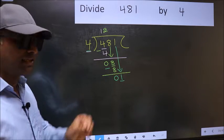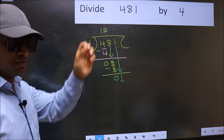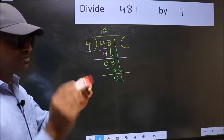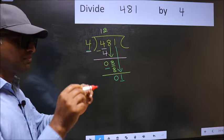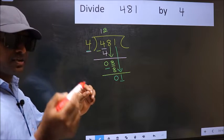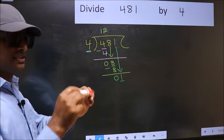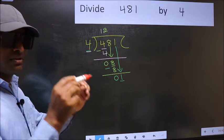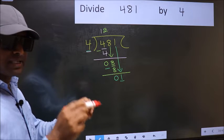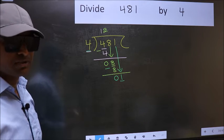Bringing the number down and also putting a dot and taking 0 — both at the same step — you are not supposed to do.